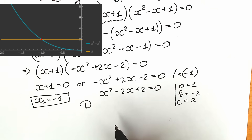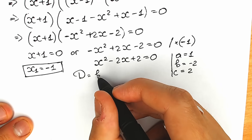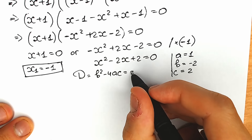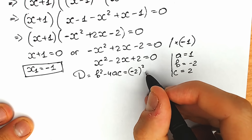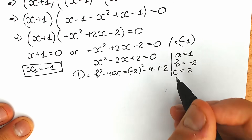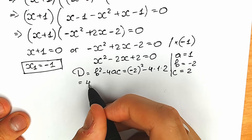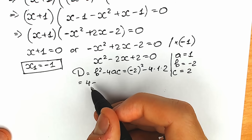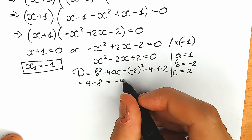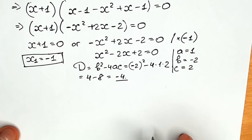We find the discriminant: D equals b squared minus 4ac. So D equals (minus 2) squared minus 4 times 1 times 2, which gives 4 minus 8 equals minus 4. Our discriminant is negative, so we will have complex roots.